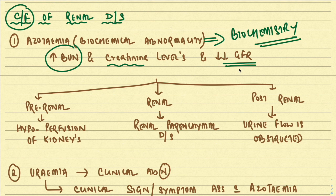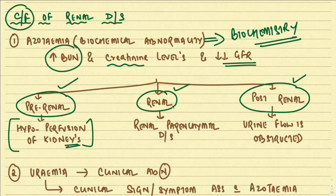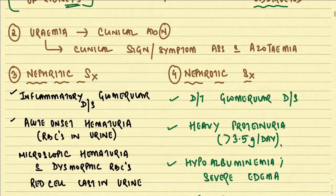Azotemia can be pre-renal, renal, or post-renal. Pre-renal causes include hypoperfusion of the kidneys due to any cause, for example severe dehydration or vomiting. Renal causes involve disease at the level of the kidney itself, such as a renal tumor or obstruction of urine flow. So the cause can be pre-renal, renal, or post-renal.